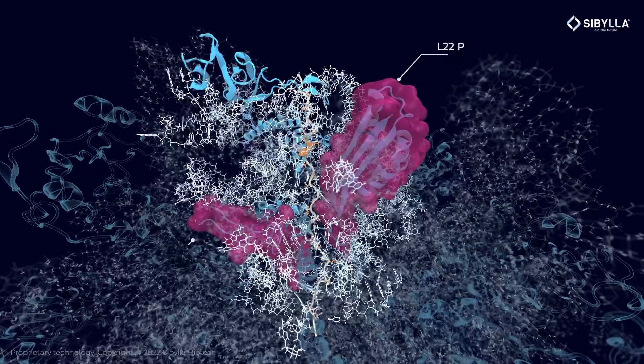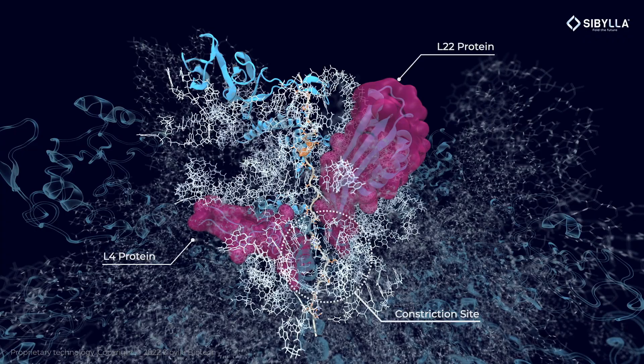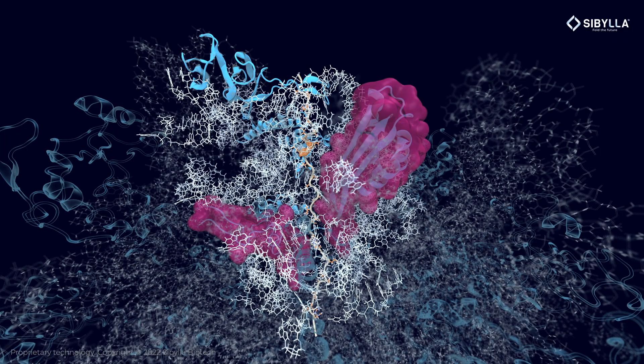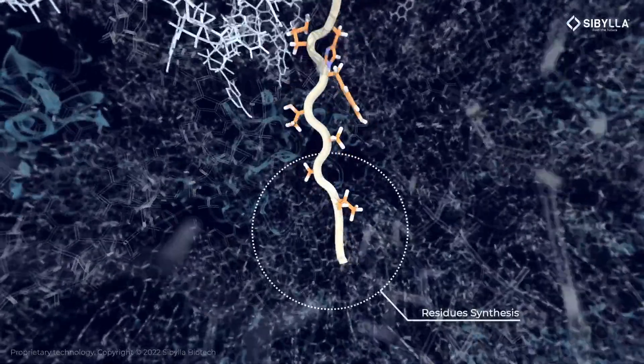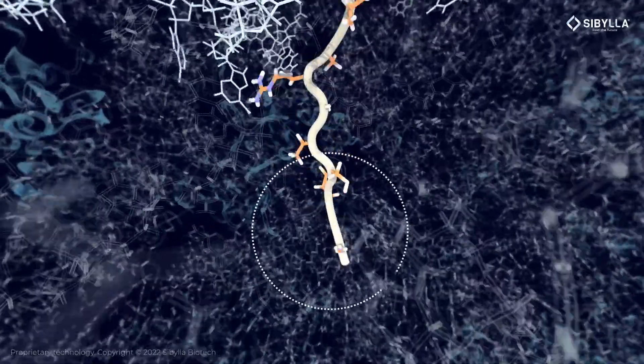Secondary and tertiary contacts start to form inside the exit tunnel after the constriction site. 30 angstrom below the constriction site, the nascent chain is synthesized and residues are added one by one in our simulations.